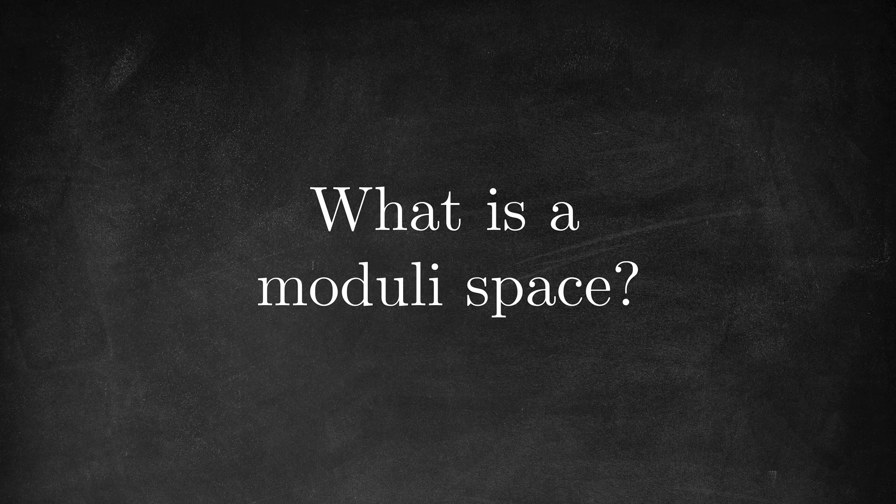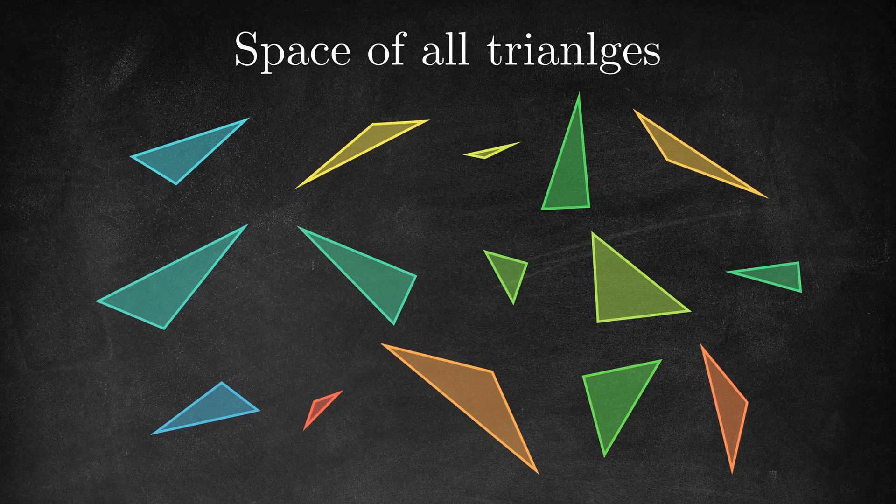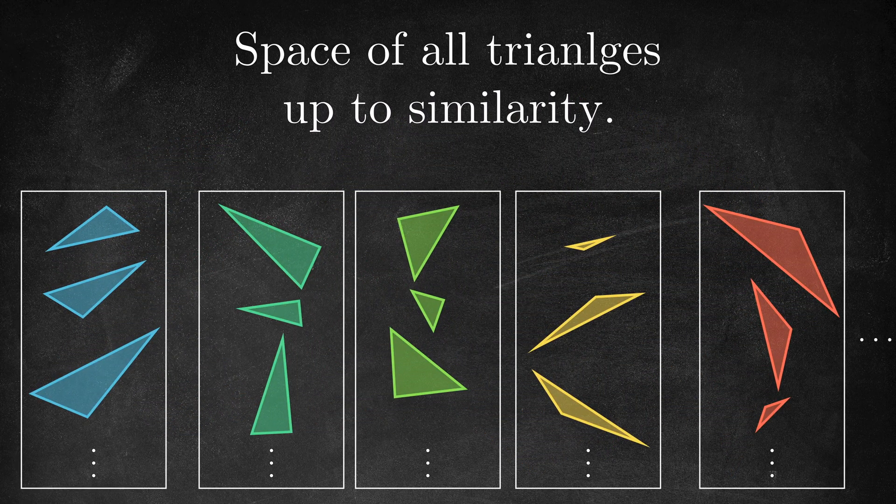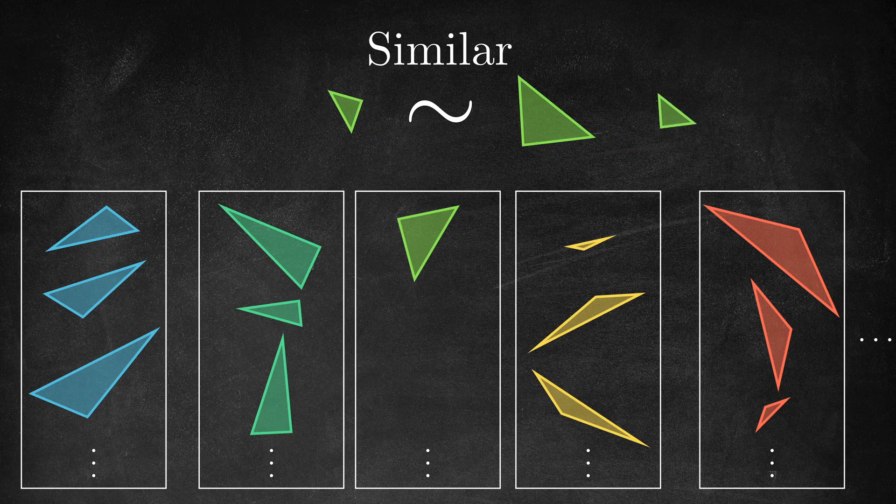As a simpler example of a moduli space, let's say we want to think about the space of all possible triangles up to similarity. What it means for two triangles to be similar is that you can rotate or scale one into the other.